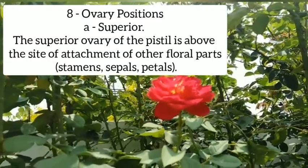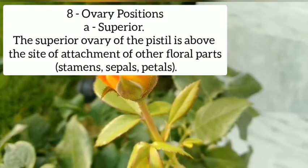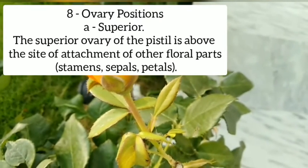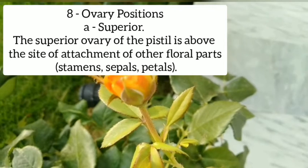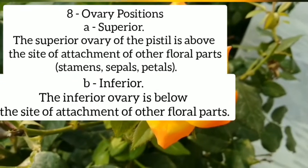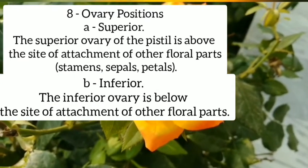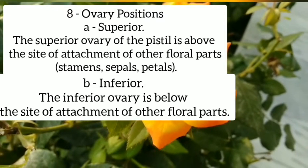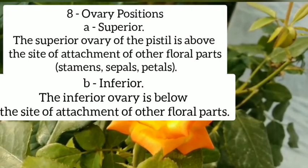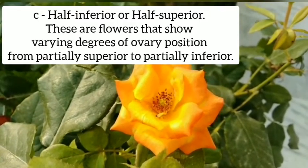Ovary positions. First, superior: the superior ovary of the pistil is above the site of attachment of other floral parts — stamens, sepals, and petals. Second, inferior: the inferior ovary is below the site of attachment of other floral parts.